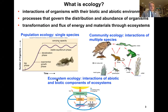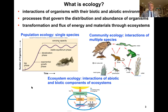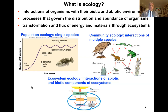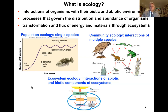What is ecology? We can think of ecology as the interaction of organisms with their biotic and abiotic environment, and the processes that govern the distribution and abundance of organisms. We can study the transformation and flux of energy and materials through ecosystems. Sub-disciplines include population ecology, which focuses on the dynamics of single species; community ecology, the interactions among multiple species; and ecosystem ecology, the interactions of abiotic and biotic components of ecosystems.